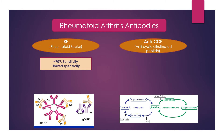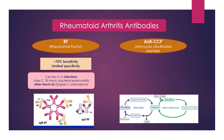Rheumatoid factor is usually the initial test done for rheumatoid arthritis, about 70% sensitive, but it is a little bit more limited in terms of specificity, meaning there can be other conditions that cause the RF to be positive. For example, infections like hep B, hep C, TB, mono, bacterial endocarditis, and other rheumatological diseases like Sjögren's and scleroderma.